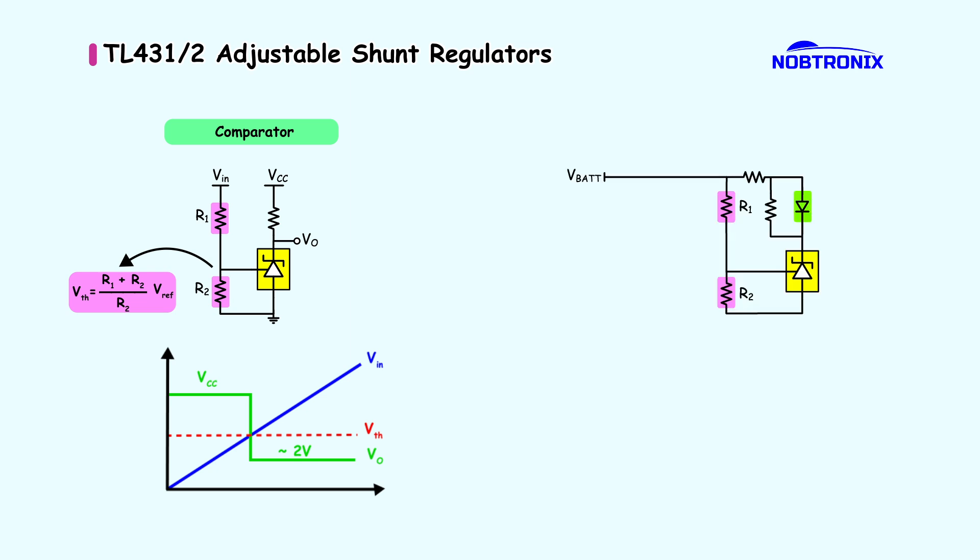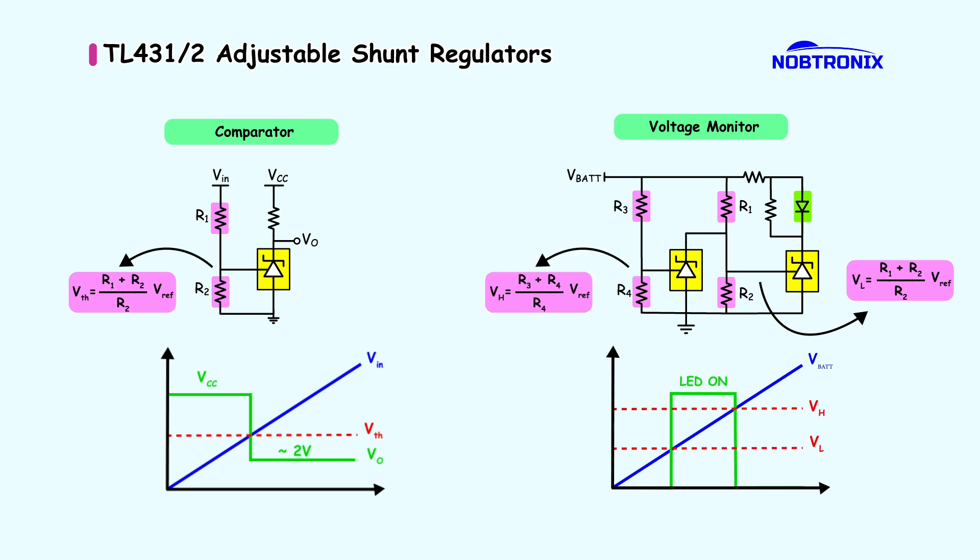The TL431 can also act as a window voltage detector, monitoring undervoltage and overvoltage conditions. Here, two TL431 devices set the lower VL and upper VH voltage thresholds using resistor-divider networks.